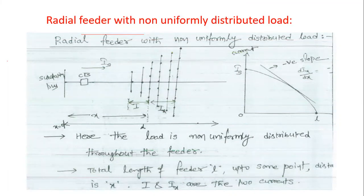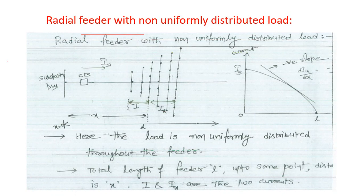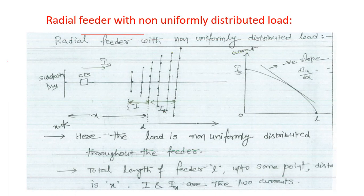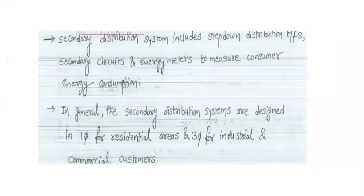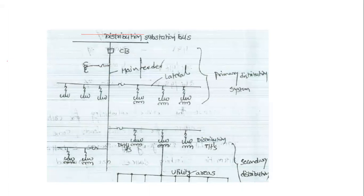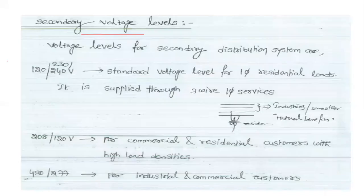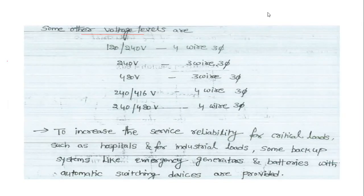This covers the secondary distribution systems, the radial feeder with uniform distribution loads, and the radial feeder with non-uniform distribution loads. This is the second unit, which has two topics: substations and distribution feeders. The remaining topic — types of distribution feeders — will be discussed in the next class, after which the third unit will begin. Thank you.